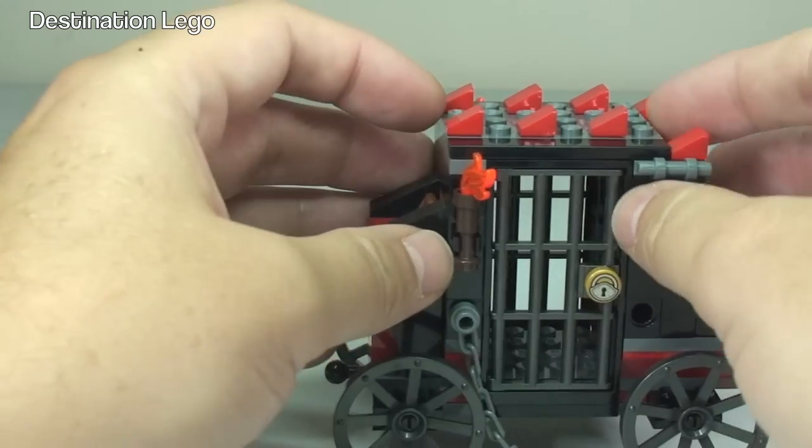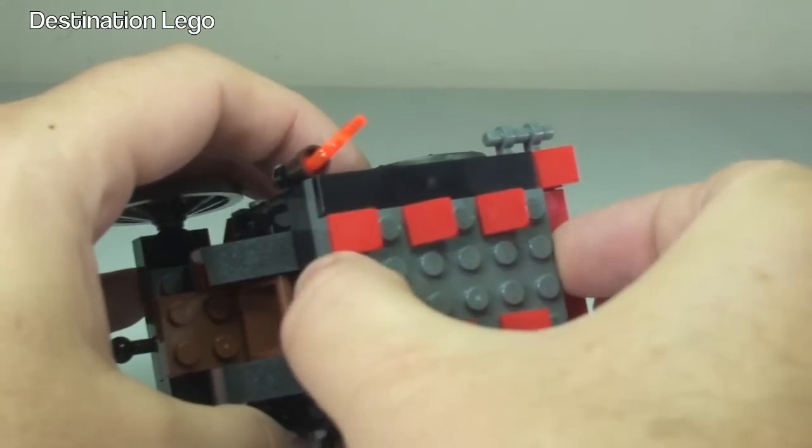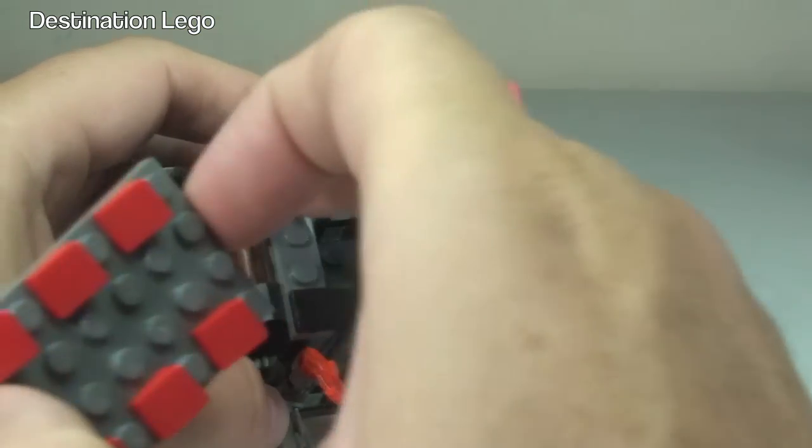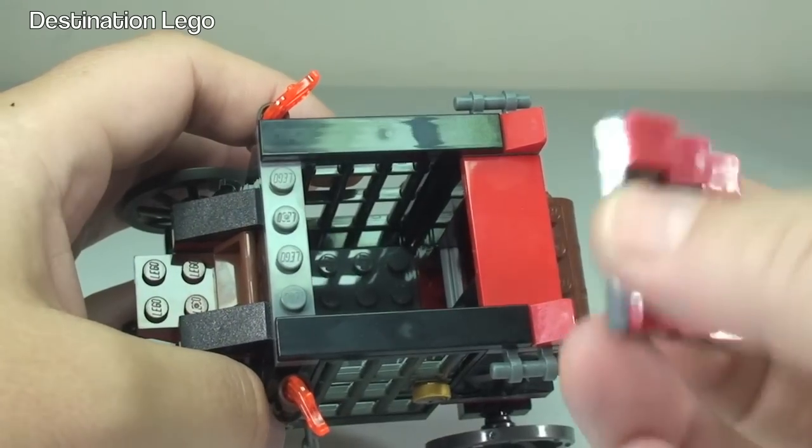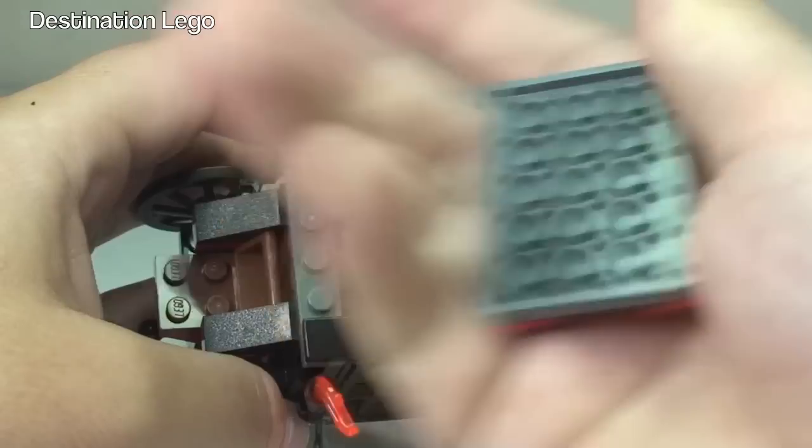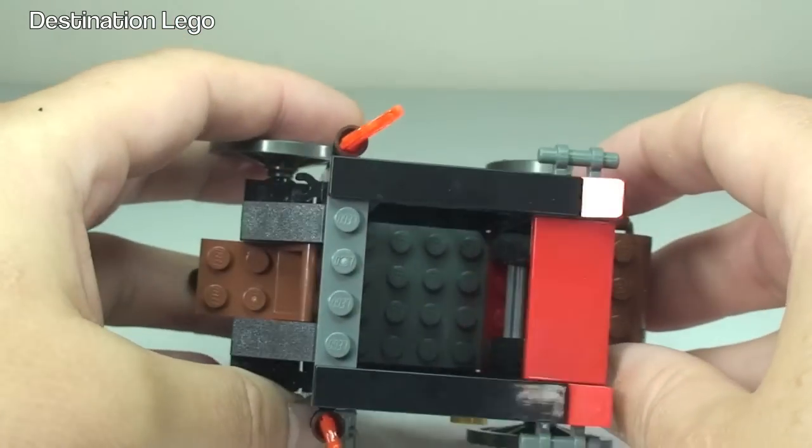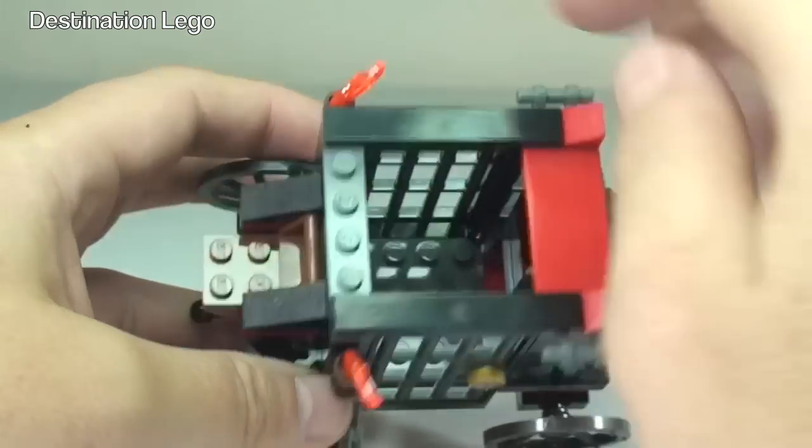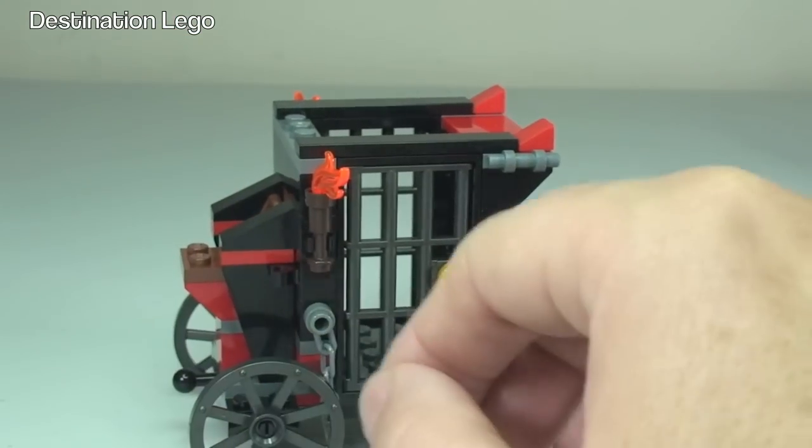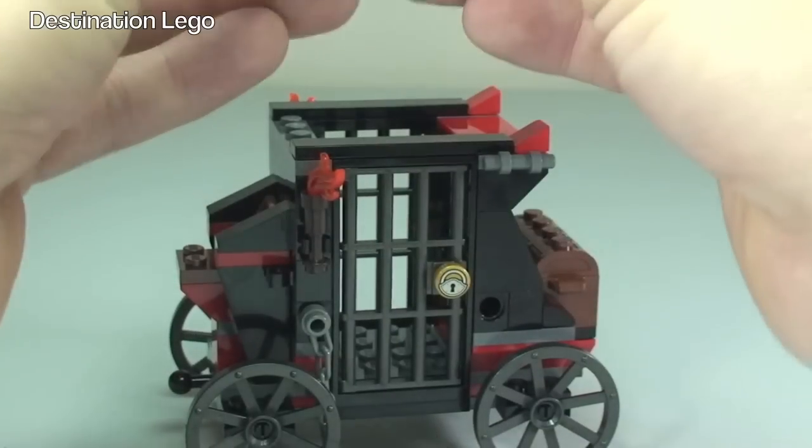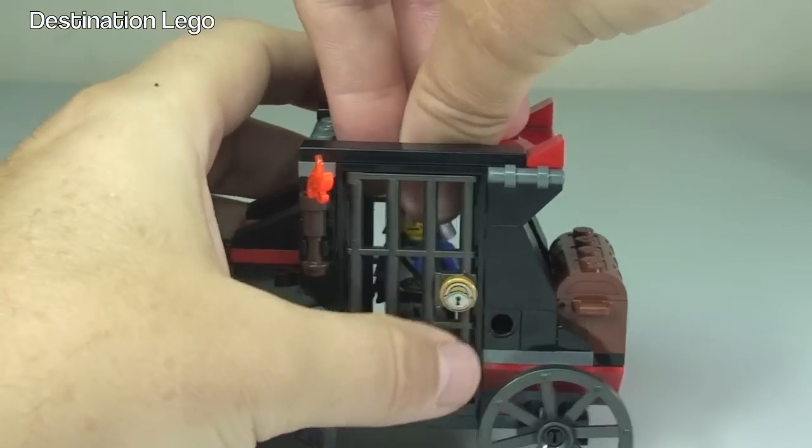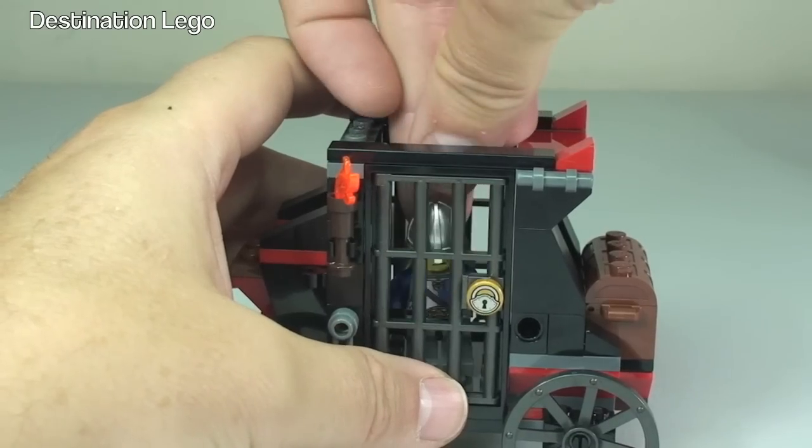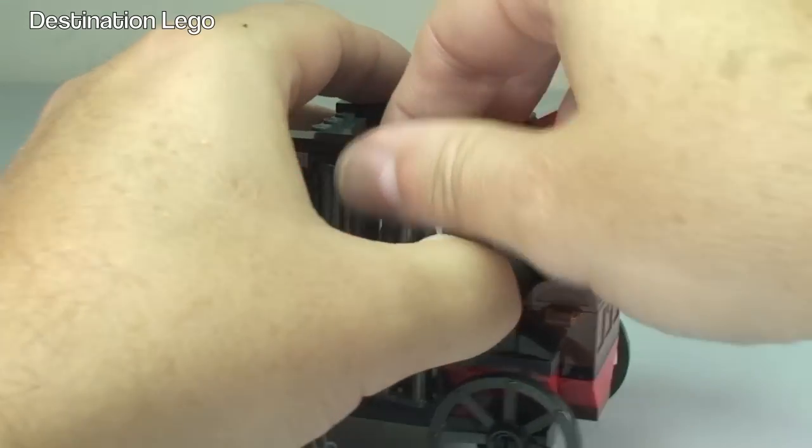The other feature is the roof comes off very easily, I'll just show you that. Just lift that off there, it's just held on by those pieces there as you can see. So that's going to give us again more access to get inside there if we want to put a minifigure in there. For example, we can take our minifigure and just pop him inside there like so.